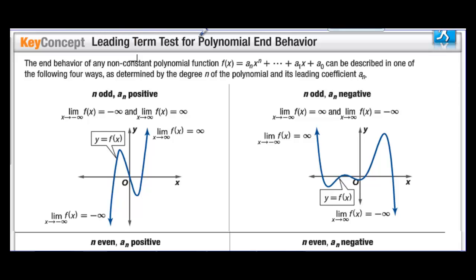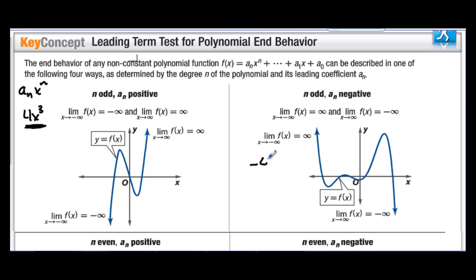Key concept: the leading term test for polynomial end behavior. If n is odd and aₙ is positive — for example 4x³ — then the limit as x approaches infinity is infinity, and the limit as x approaches negative infinity is negative infinity. If n is odd but aₙ is negative, for example −4x³, these are reversed: the limit as x approaches negative infinity is infinity, and as x approaches infinity is negative infinity.